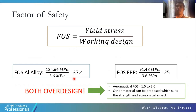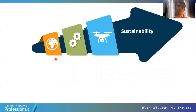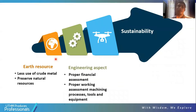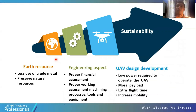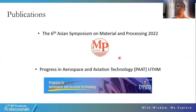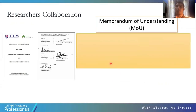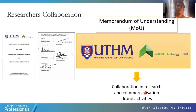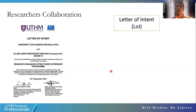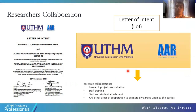The advantages of this research include contributing to less use of earth resources, providing academic contributions through proper financial and working assessment with machinery processes and equipment, and contributing to better UAV design — allowing lower power operation and reduced weight for more payload and extra flight time. This research has been published in the 6th Asia Symposium on Materials and Processing 2022 and in Progress in Aerospace and Aviation Technology. The research was conducted in collaboration between UTHM and Aerodon for research and commercialization, and also with Allied Aero Resources for research, project consultation, staff training, and student attachments.